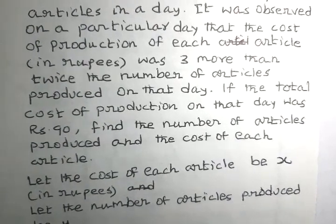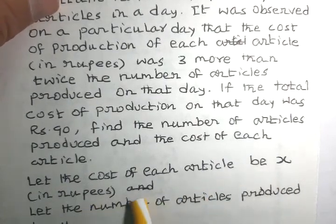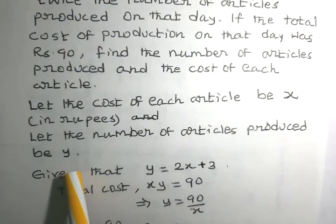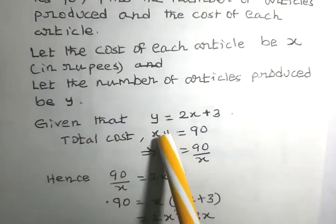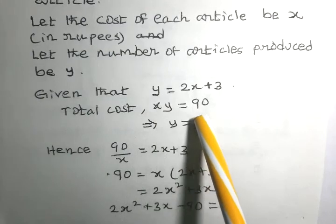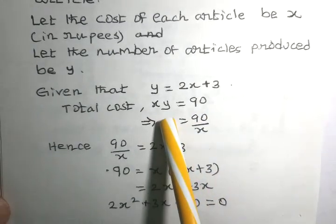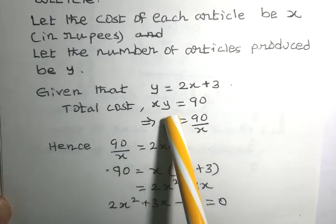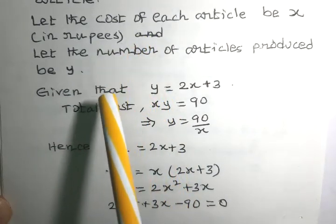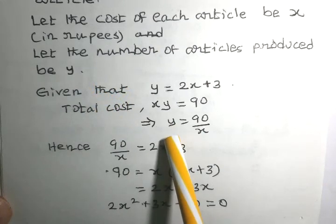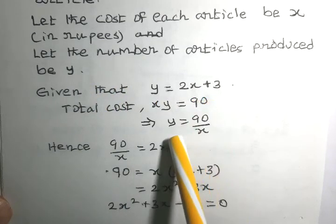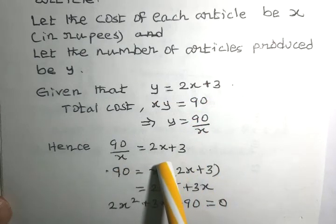Let the cost of each article be x in rupees and let the number of articles produced be y. Given that y equals 2x plus 3, and total cost x times y equals 90. Since we have taken cost of each article as x and the number of articles as y, y can also be written as 90 divided by x. Both expressions for y can be equated.